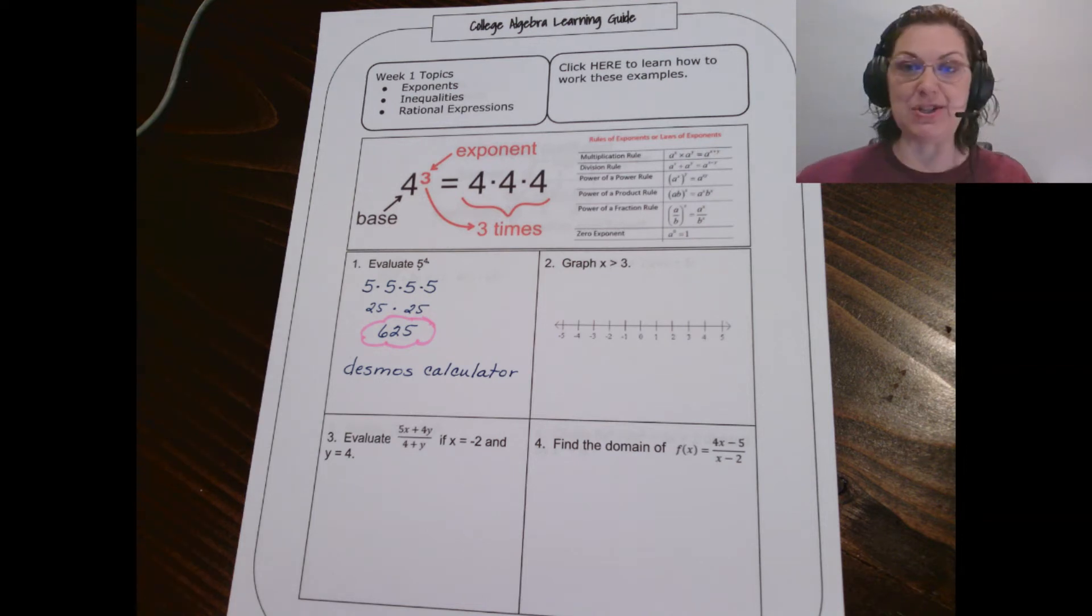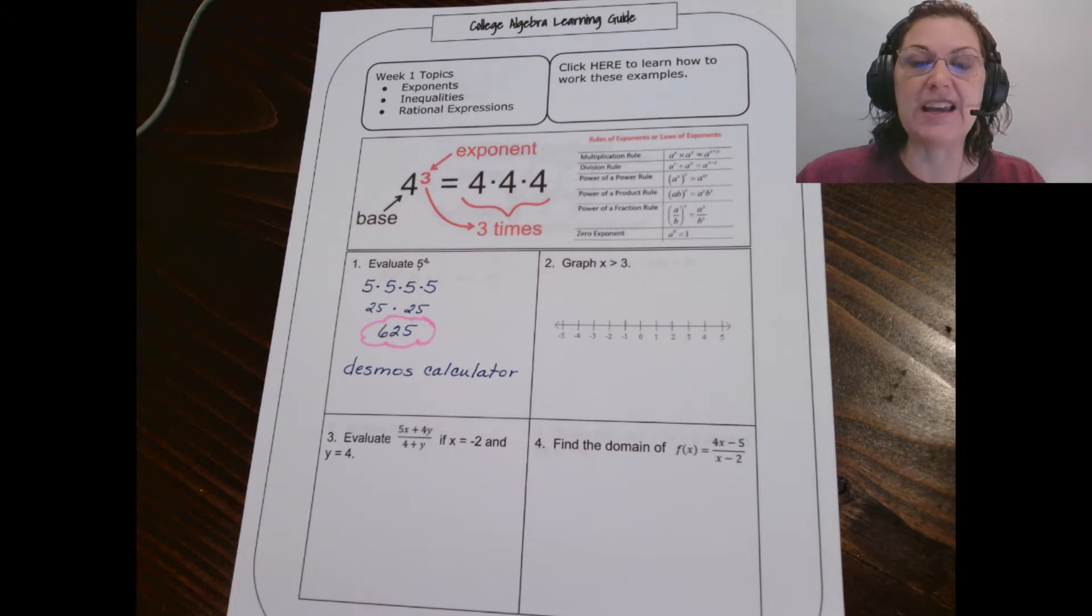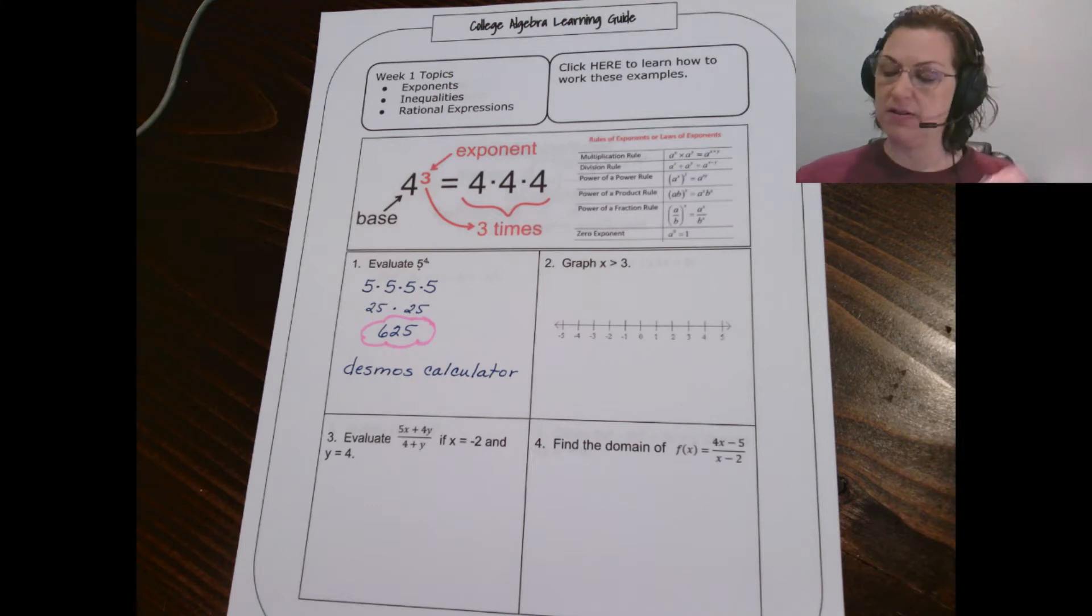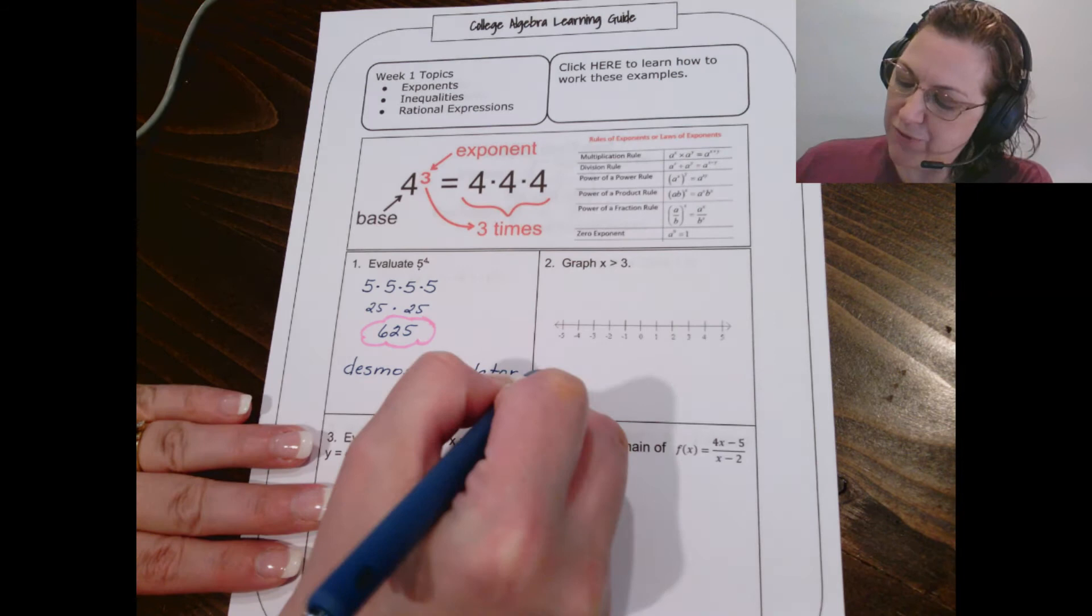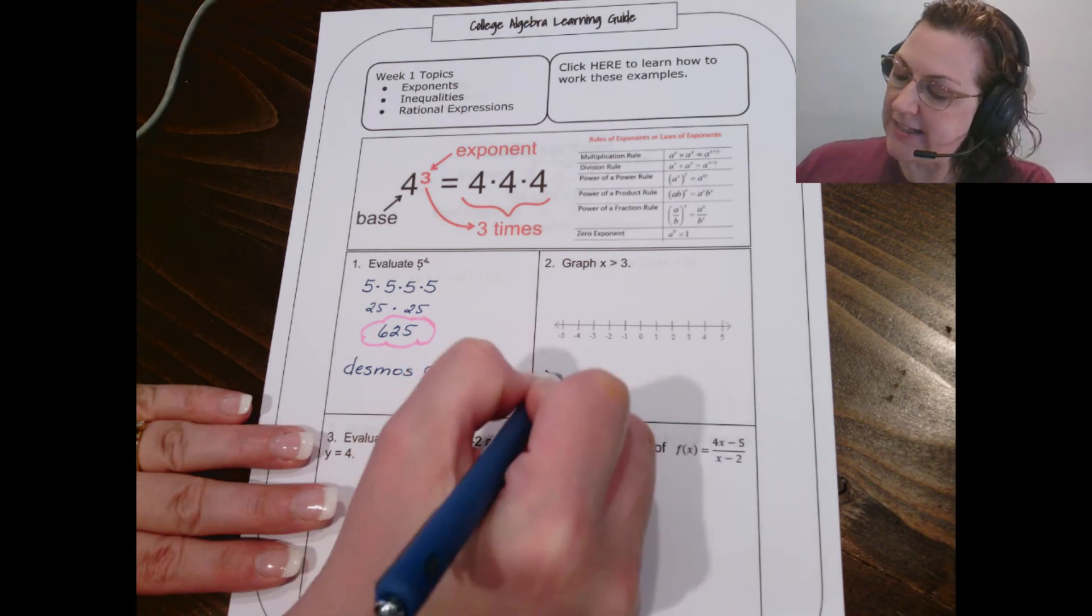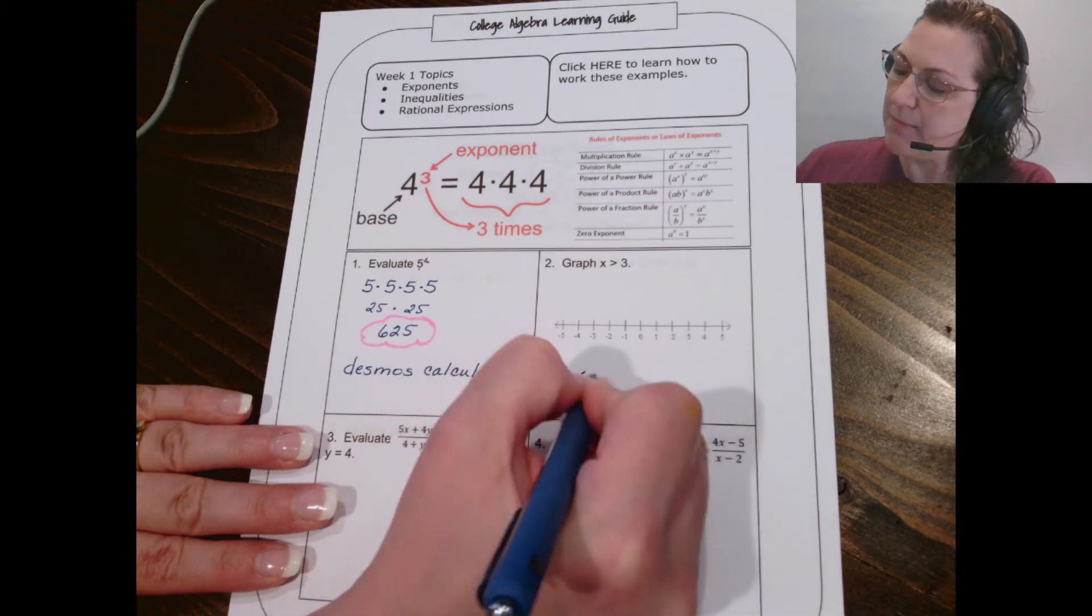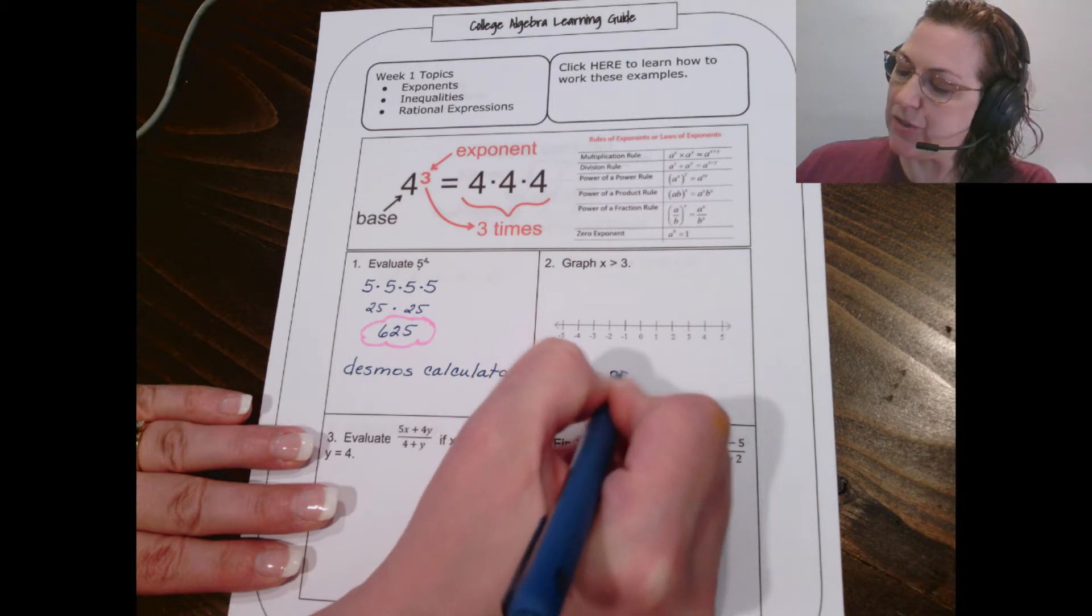Let's move along to number two. I know it doesn't seem like it relates but it kind of does. So let's look at graphing x is greater than 3. Now when we look at an inequality, the first thing we have to do for our notes, we're just going to say less than or greater than means an open circle.